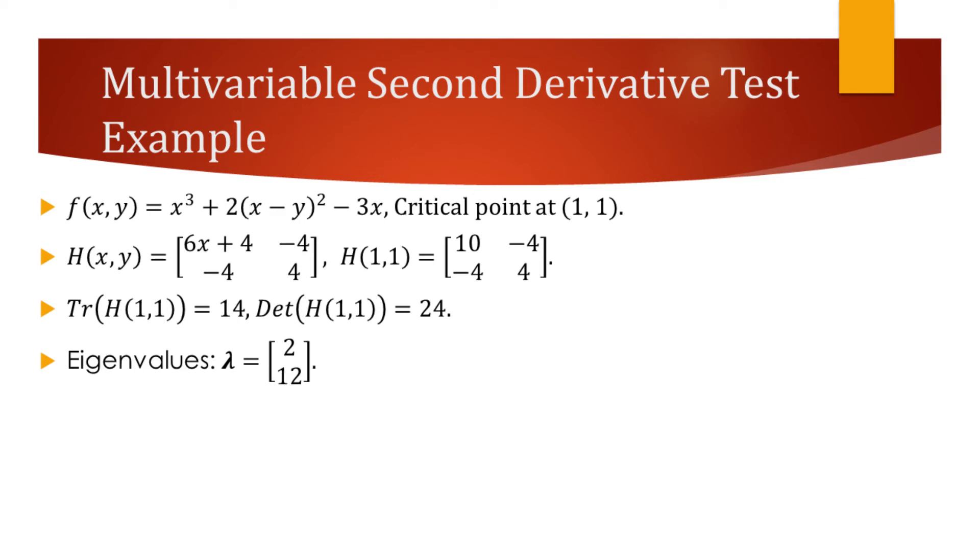To accomplish this, first we need to find the Hessian of this function at that critical point. Once we've done it, we need to find the definiteness of this Hessian.